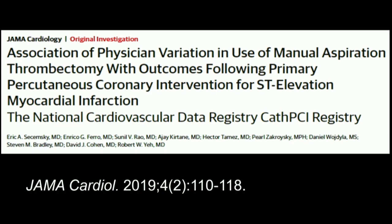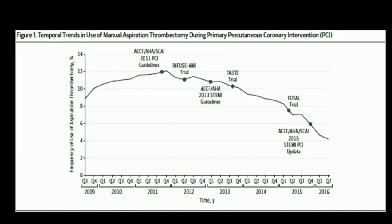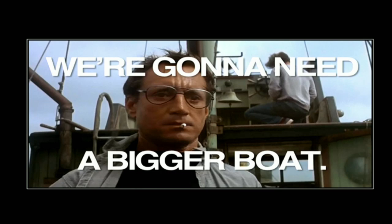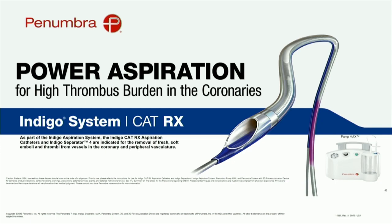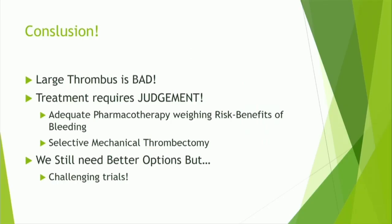We're going to need a bigger boat — meaning a better device. The Penumbra system is a new tool that deserves evaluation. It's sort of power aspiration, and data shows it's much more effective than manual aspiration and more effective than the AngioJet. An example case shows more complete and better aspiration. Will it have a place in thrombus grade 4 and 5? It's possible.